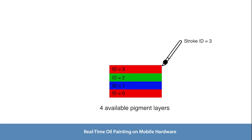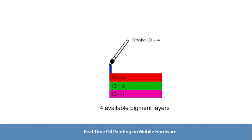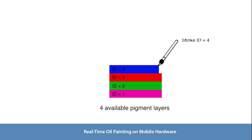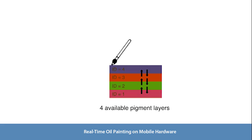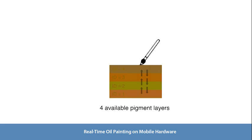When all available layers are full, the bottom two are merged and the new pigments are added in the top layer. The pigments in different vertical layers are mixed by brush movement. The duration of brush movement determines the amount of pigment mixing.